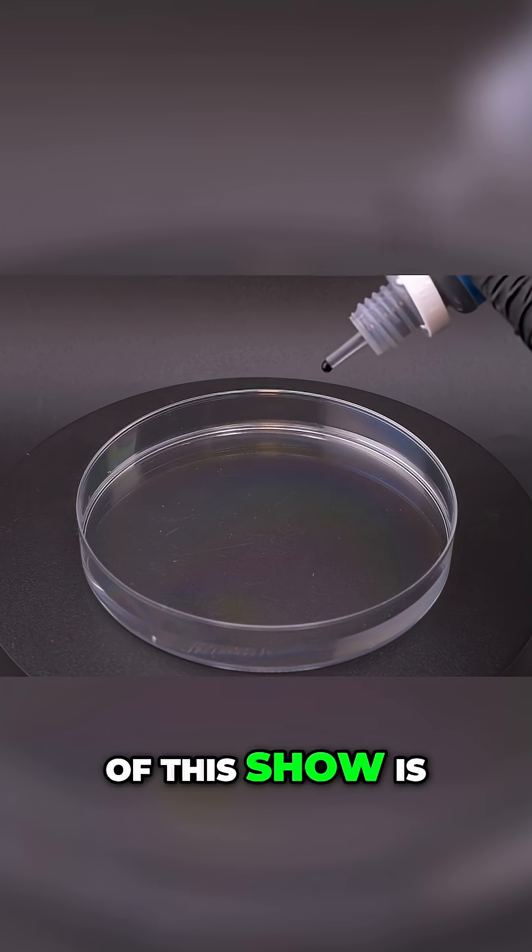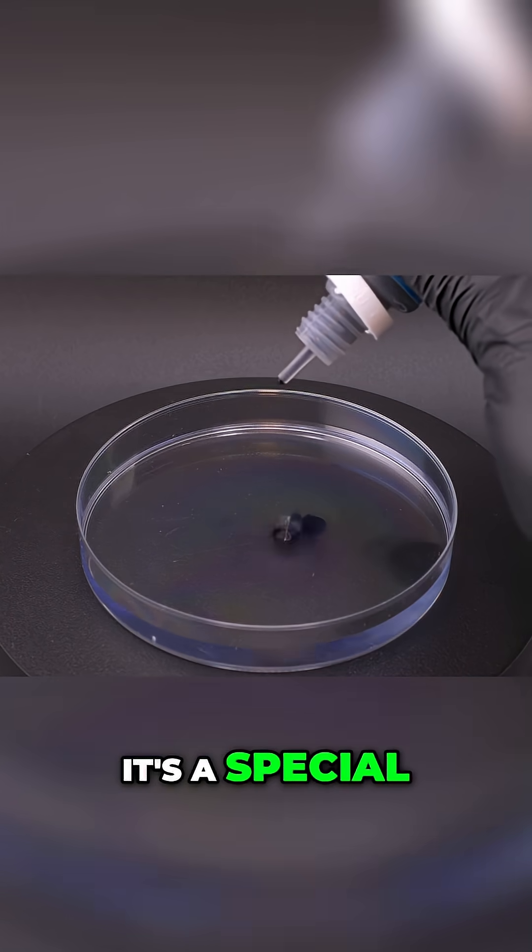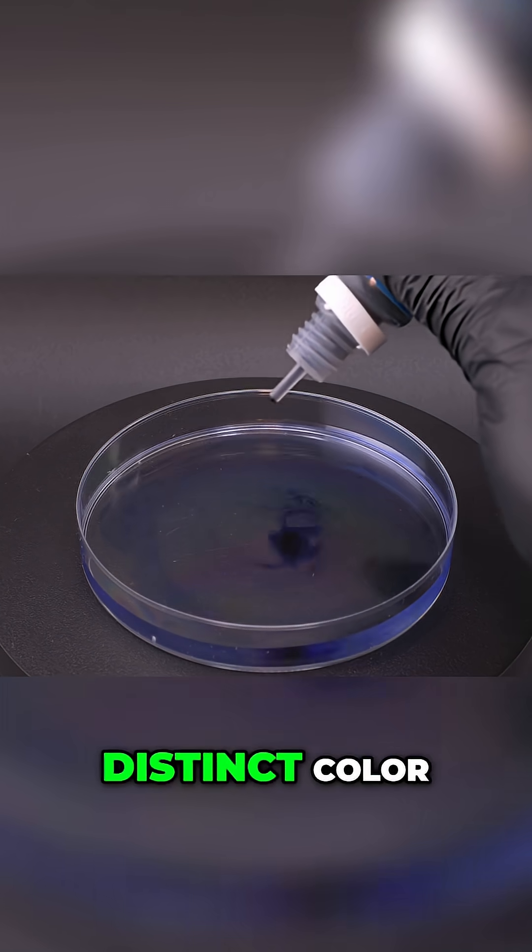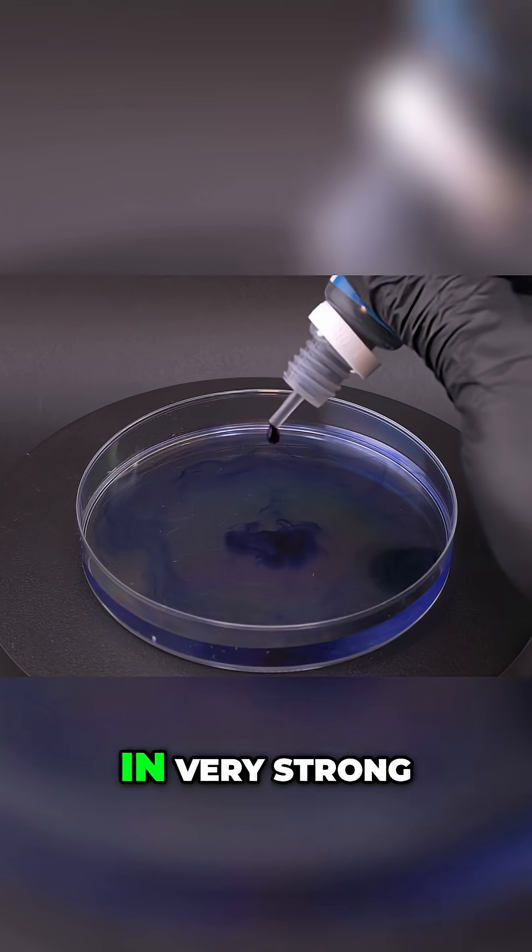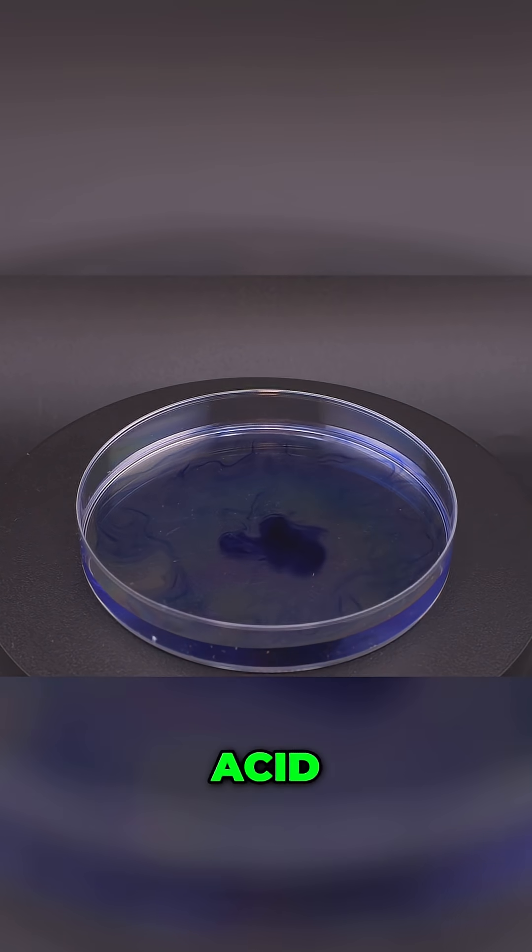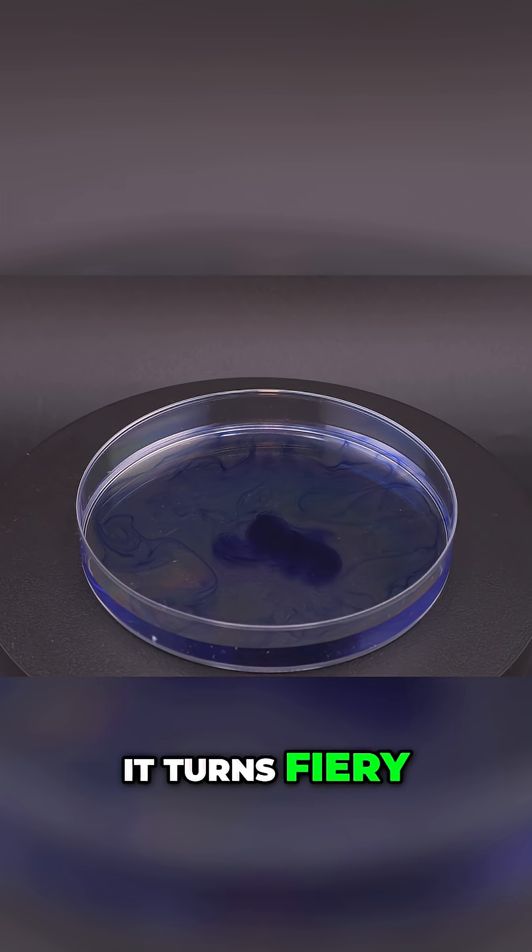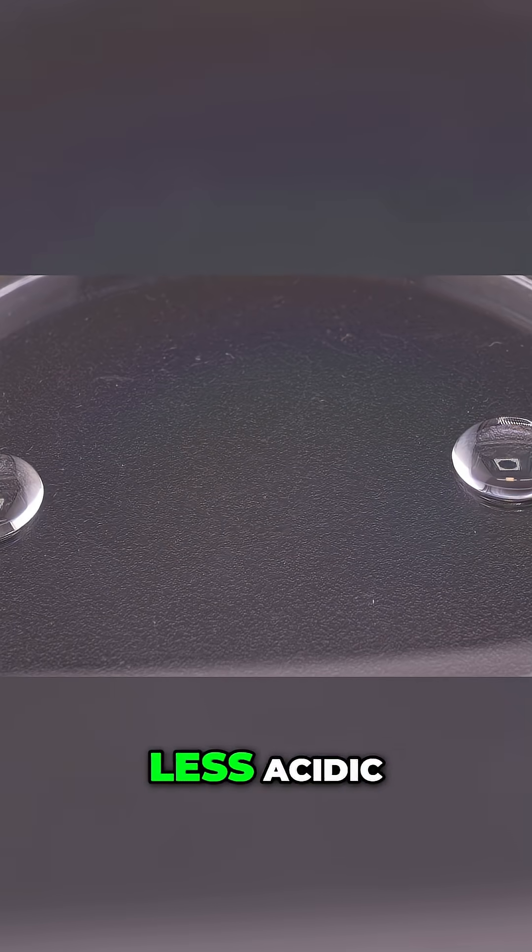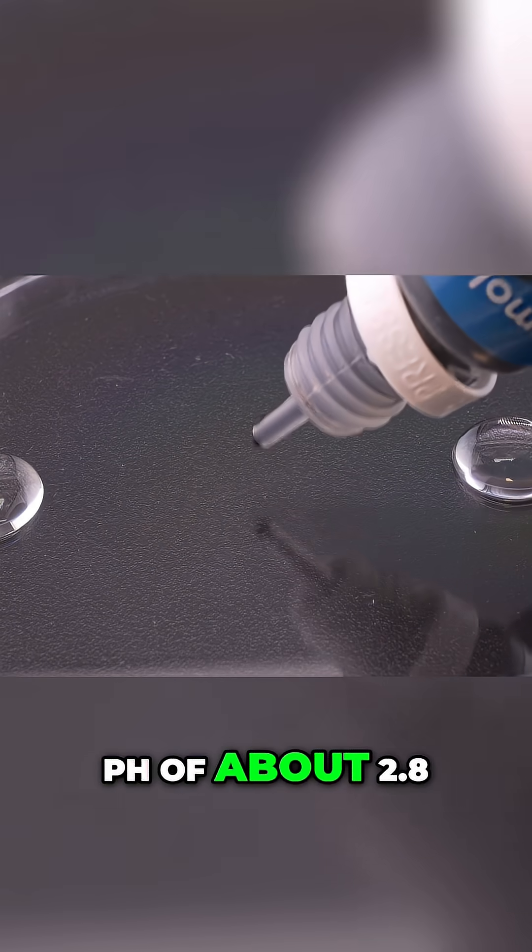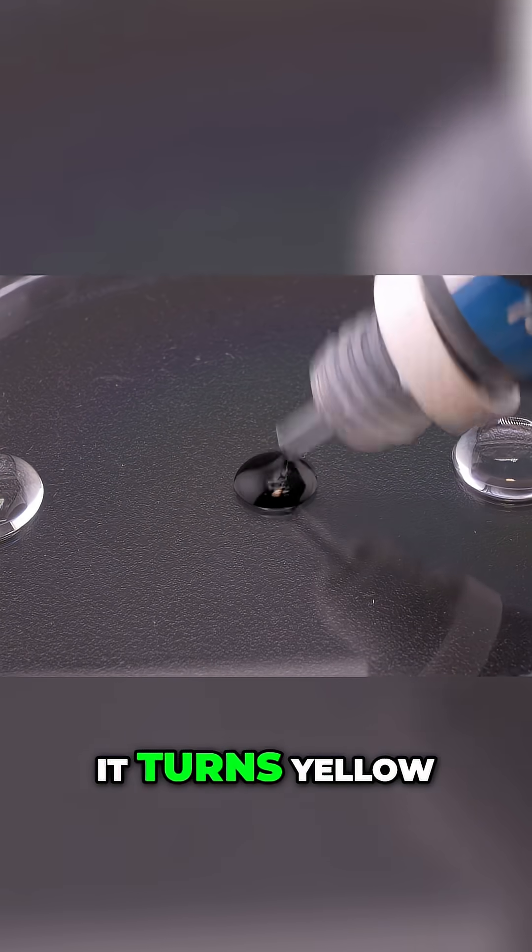But the real star of this show is thymol blue. It's a special indicator because it has two distinct color changes. In very strong acid, with a pH below about 2, it turns fiery red. As the solution gets less acidic from the pH of about 2.8 to 8, it turns yellow.